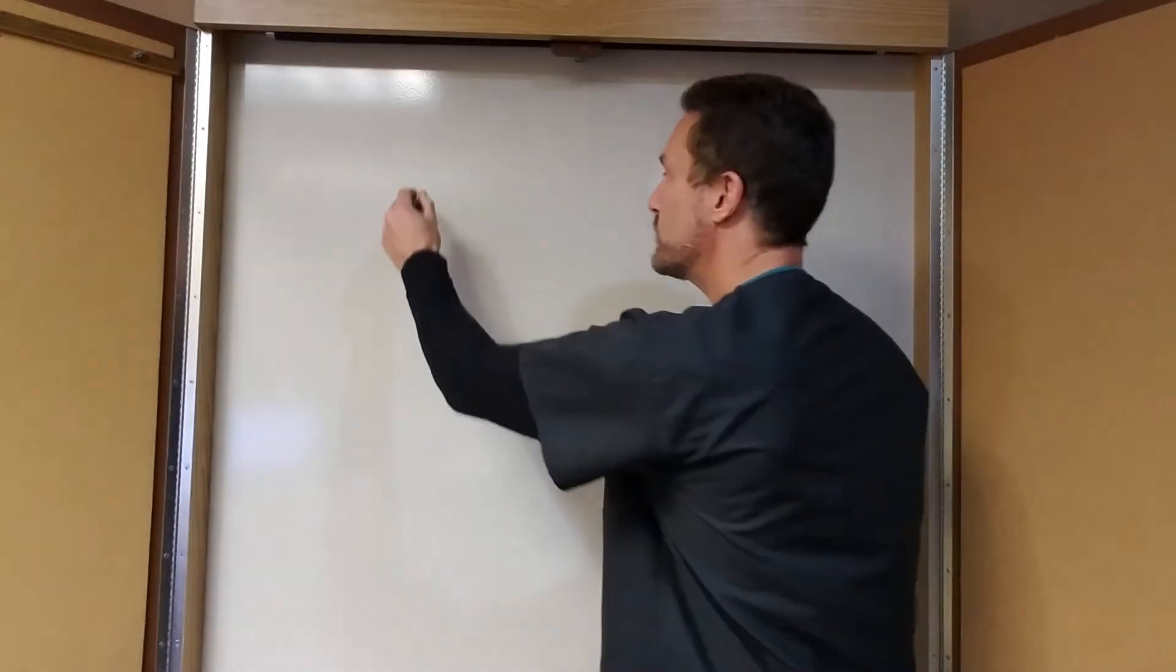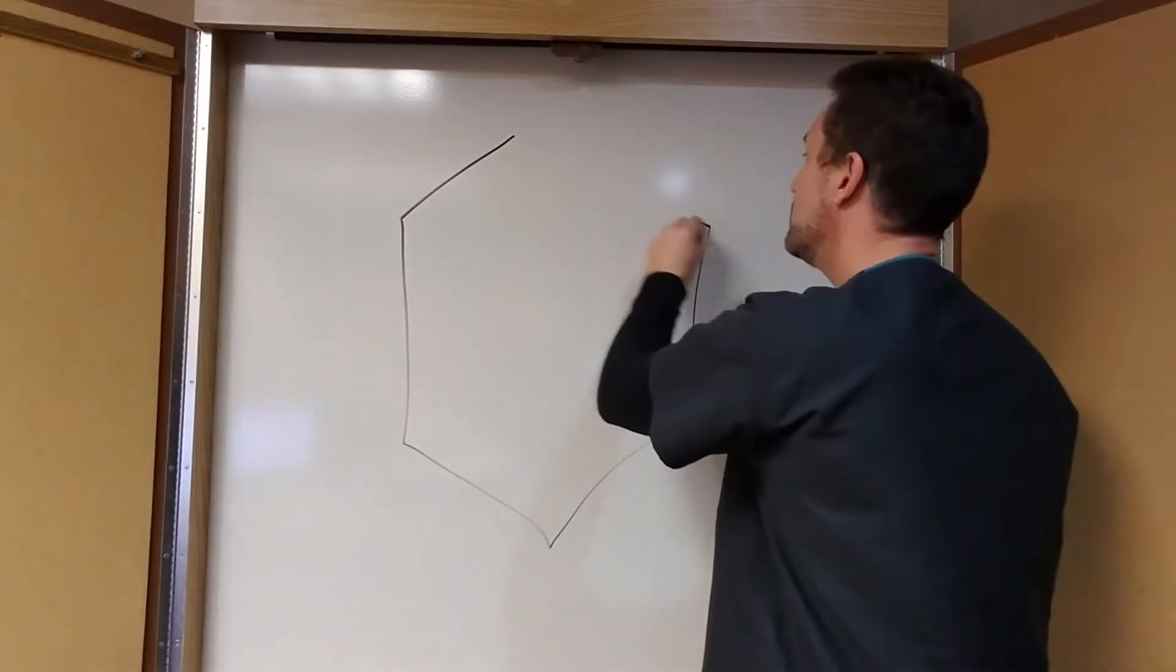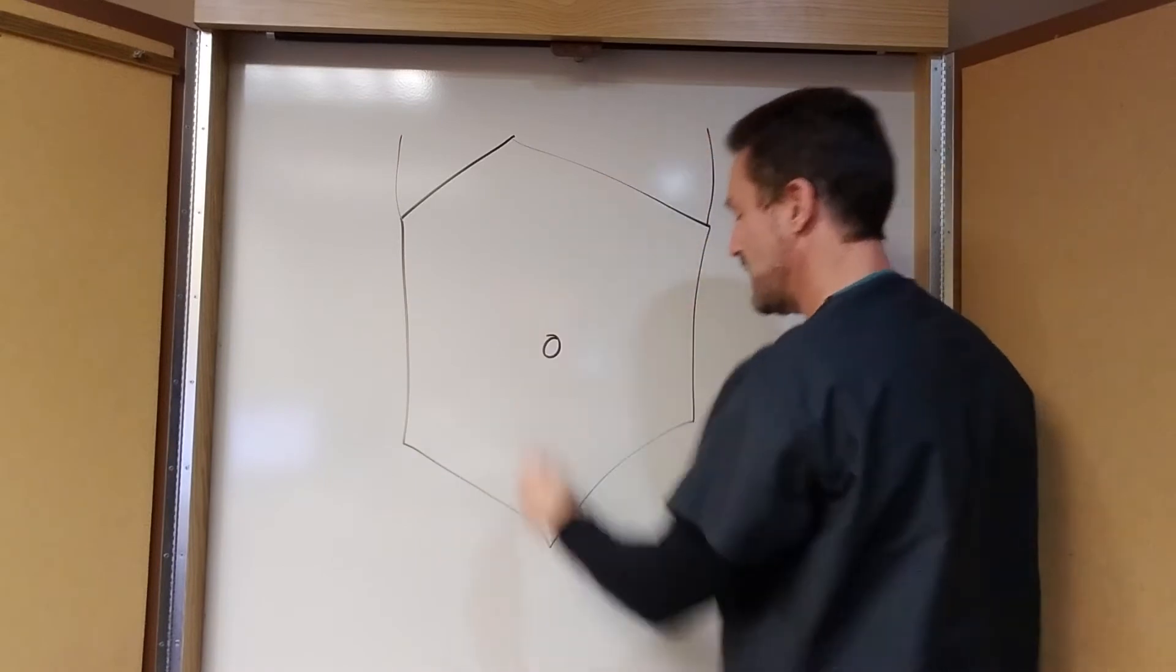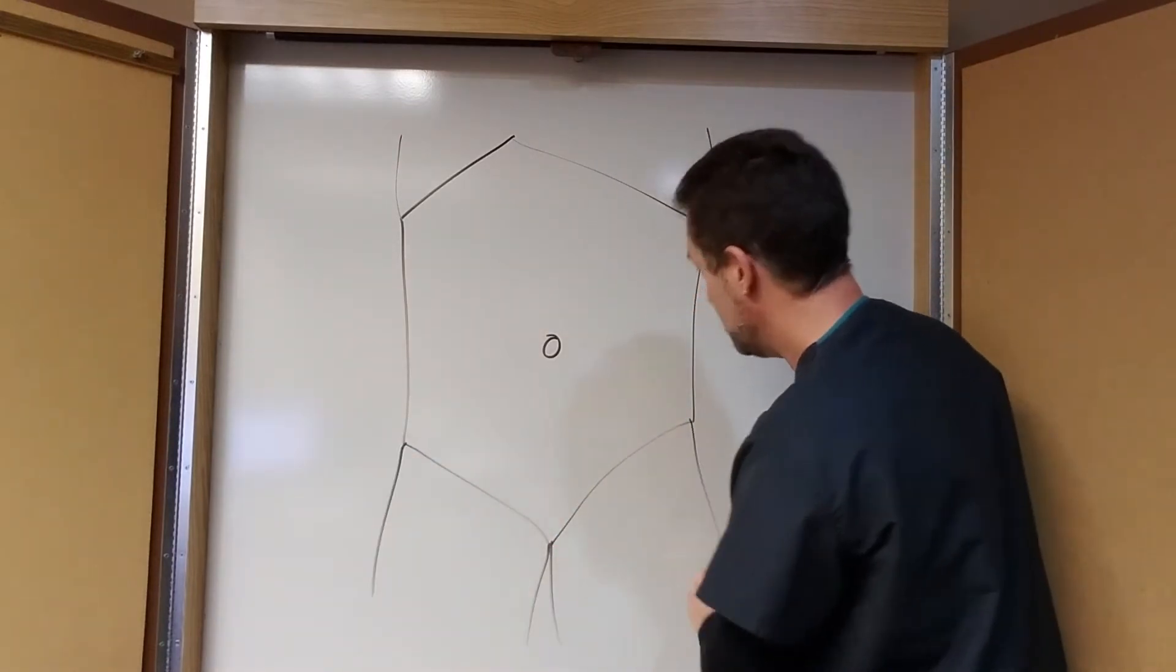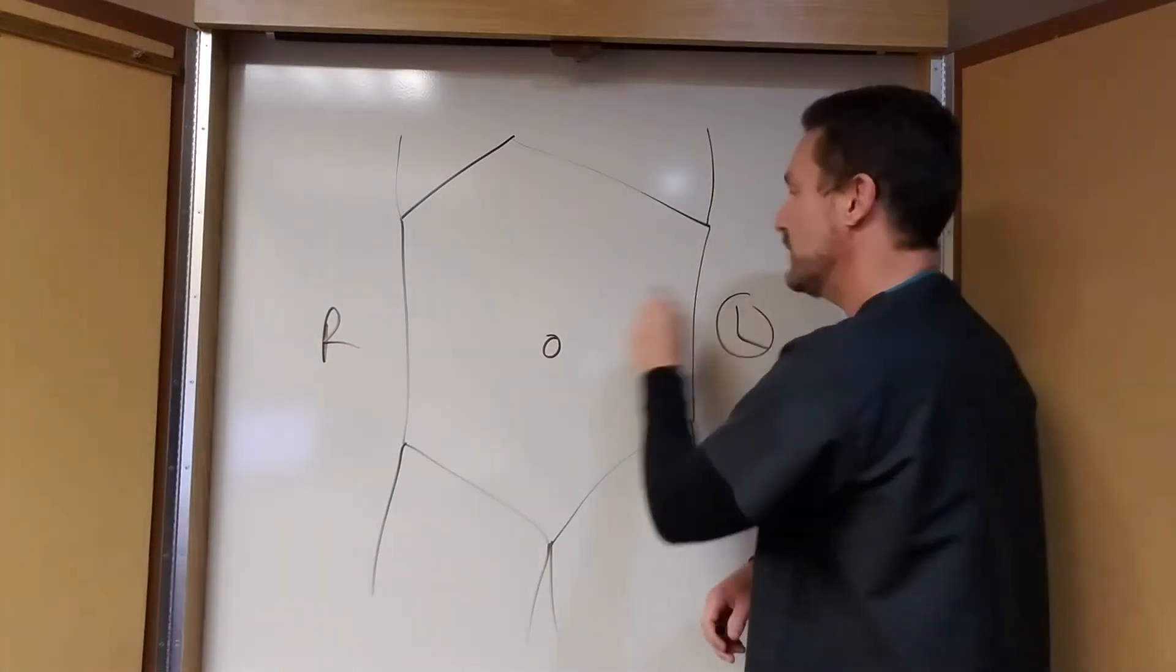So we're going to start with drawing the abdomen, and I like to draw it like that, with your belly button in the middle, your chest up on top, legs down there, and this is your right side and your left side looking at you.